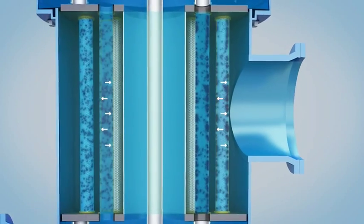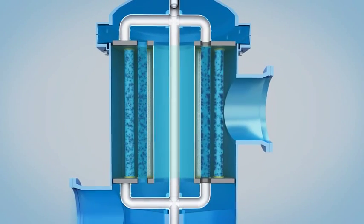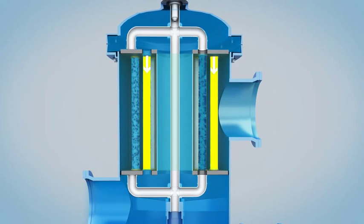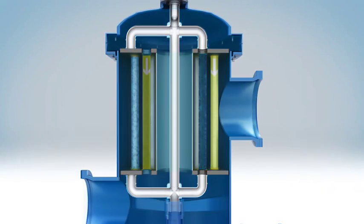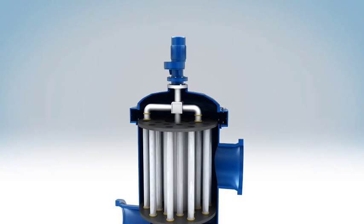When the pressure drop between the internal and external of the filter mesh rises to a set value, the filter could operate back flushing process automatically. The filter meshes, which are open at both ends, will be alternately flushed in sequence from above and below. This action doesn't interrupt the normal operation.